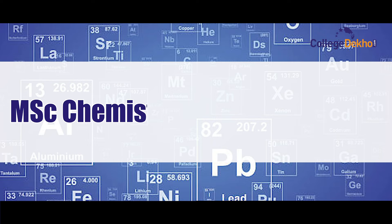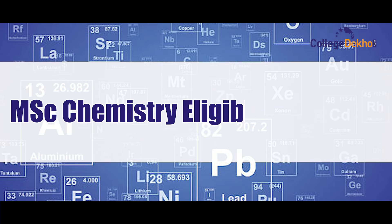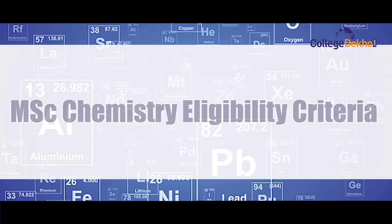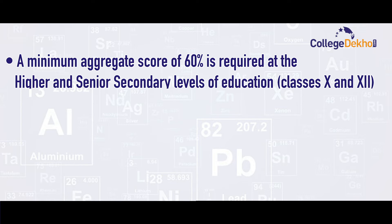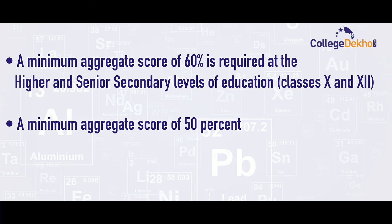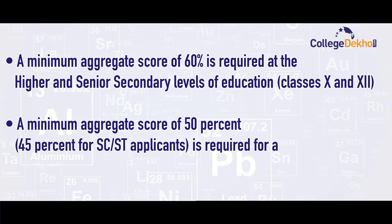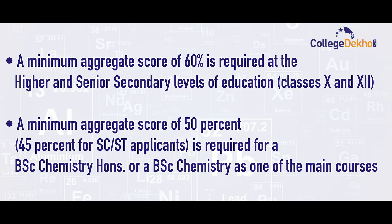The MSc Chemistry course fee for distance education varies between 12,000 to 60,000. Now we will talk about the MSc Chemistry eligibility criteria. A minimum aggregate score of 60% is required at the higher and senior secondary levels, that is Class 10th and 12th. Also, a minimum aggregate score of 50% is required for the chemistry honours or BSc Chemistry course.